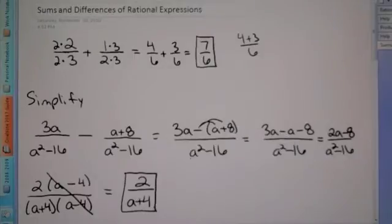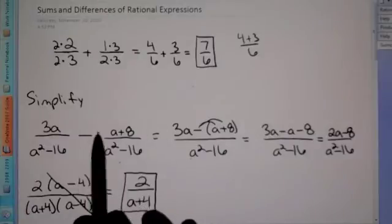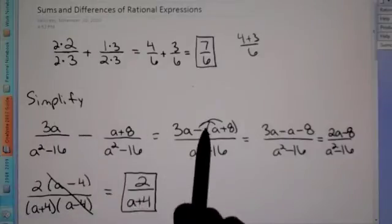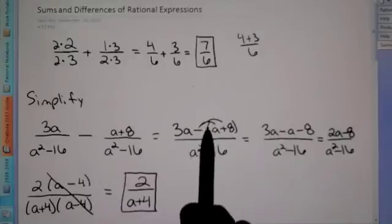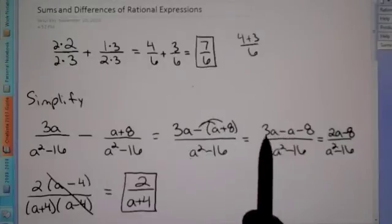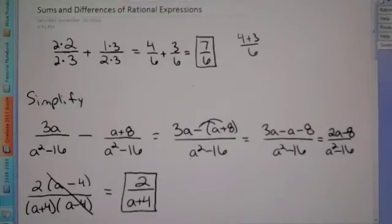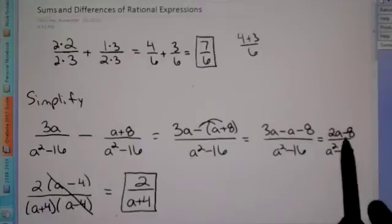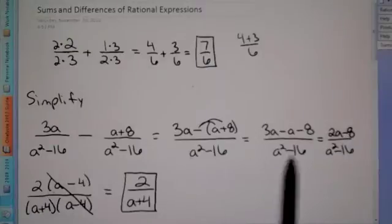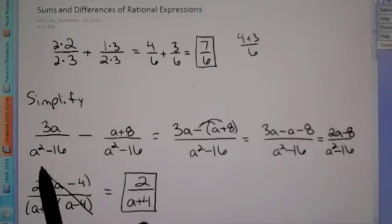So that is how we simplify. Step 1: if it's the same denominator, rewrite the numerator minus the other numerator in parentheses. Distribute the negative, then combine like terms. After combining the numerator, ask yourself: can I factor anything out? We factored 2 out on top, broke the bottom into two parentheses, and were able to reduce. That is how we do our first problem.